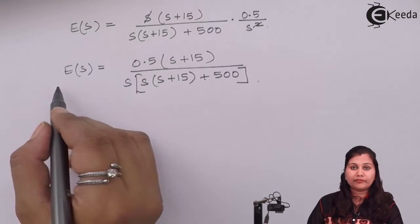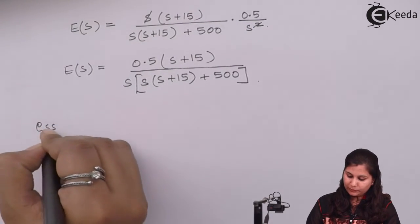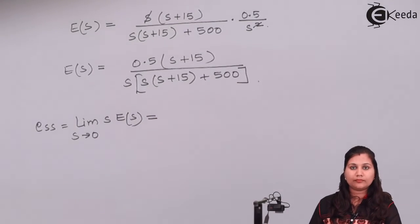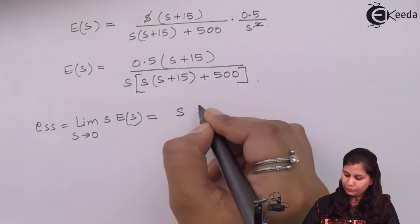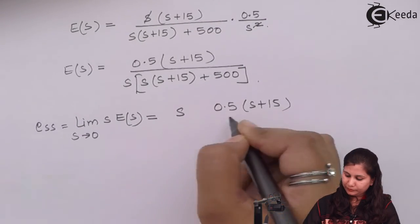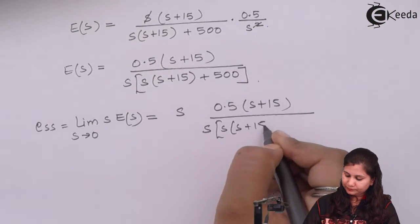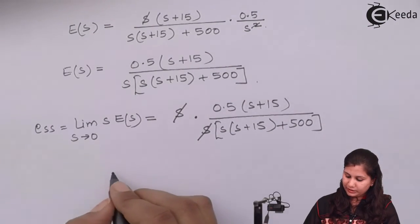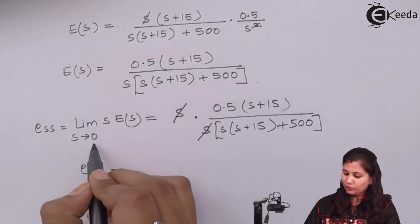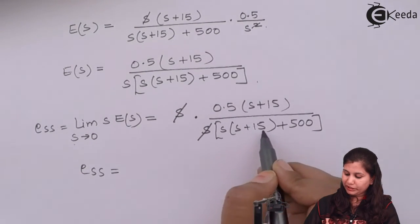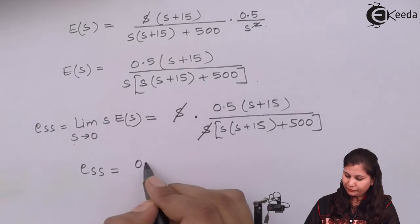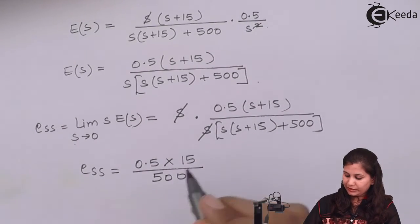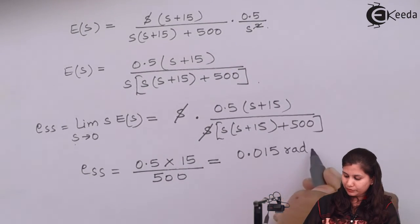To find the steady state error ess, we use the final value theorem: ess = lim(S→0) S·E(S). Applying this limit, S cancels with one S in the denominator, and as S→0 we get ess = (0.5 × 15) / 500, which gives ess = 0.015 radians per second.